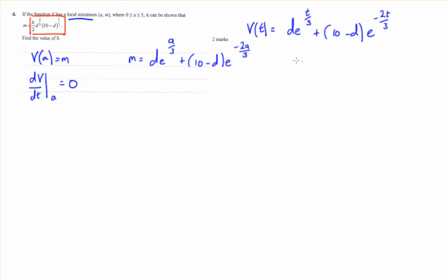We can take the derivative of this thing, you can do it with your CAS if you like. So taking the derivative, we get d on 3 e to the power of t on 3 plus 2 thirds d minus 10 e to the negative 2t on 3.